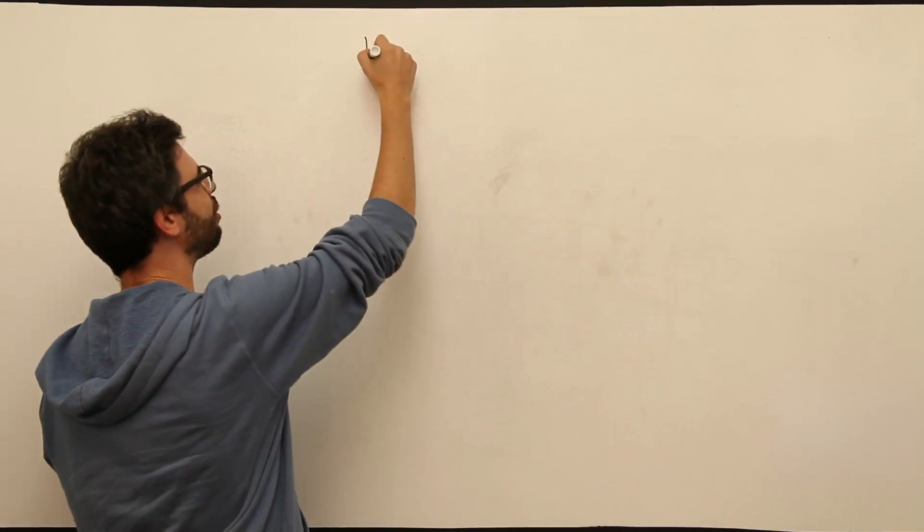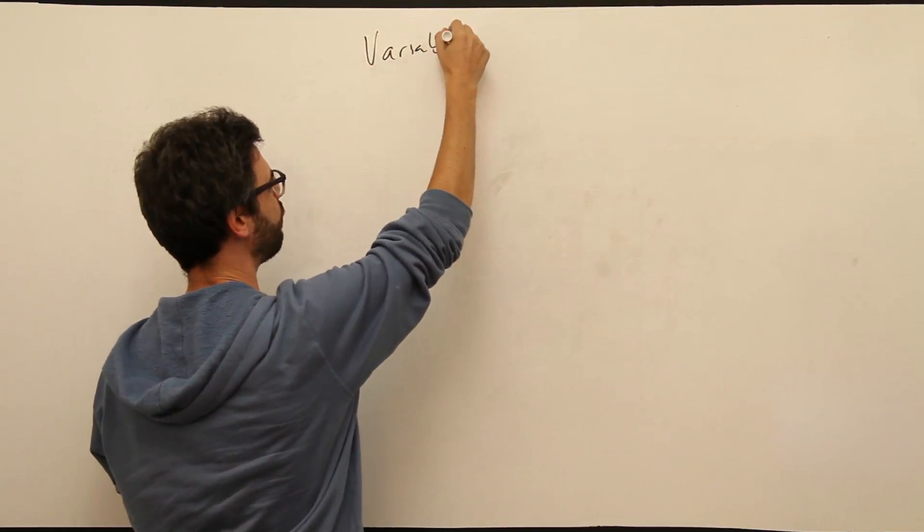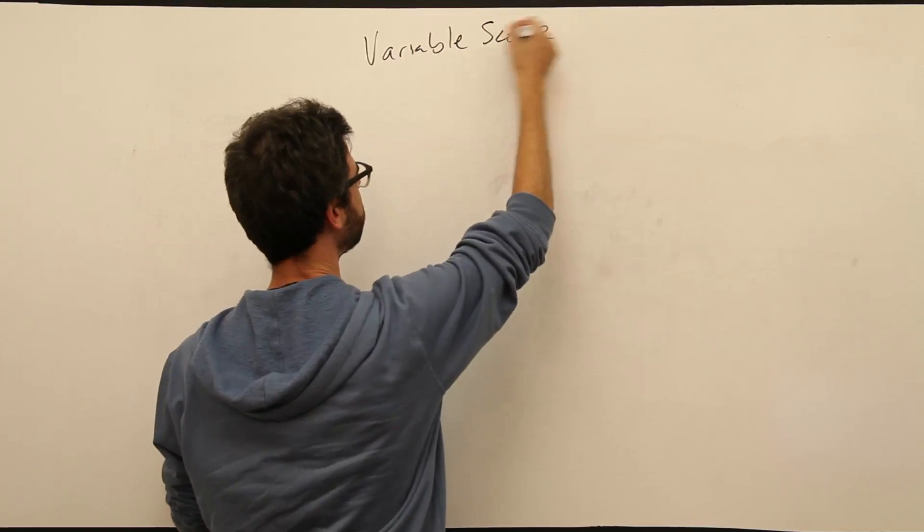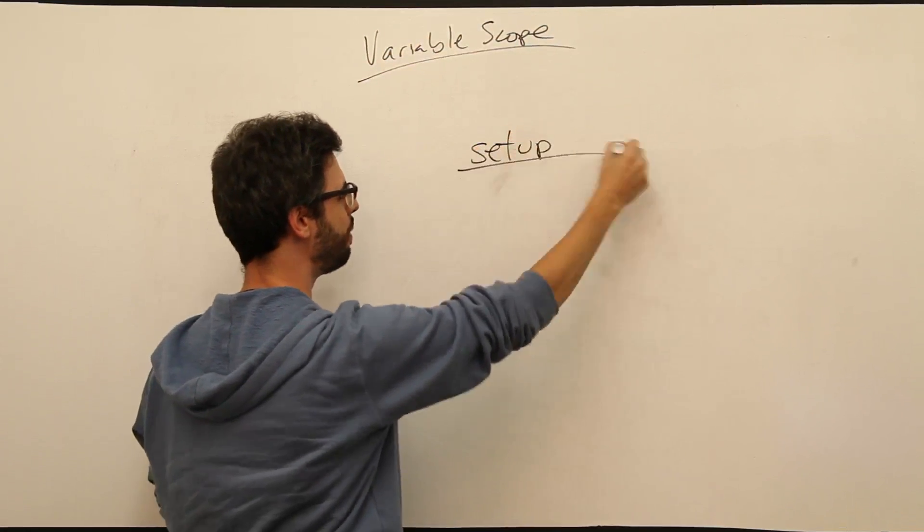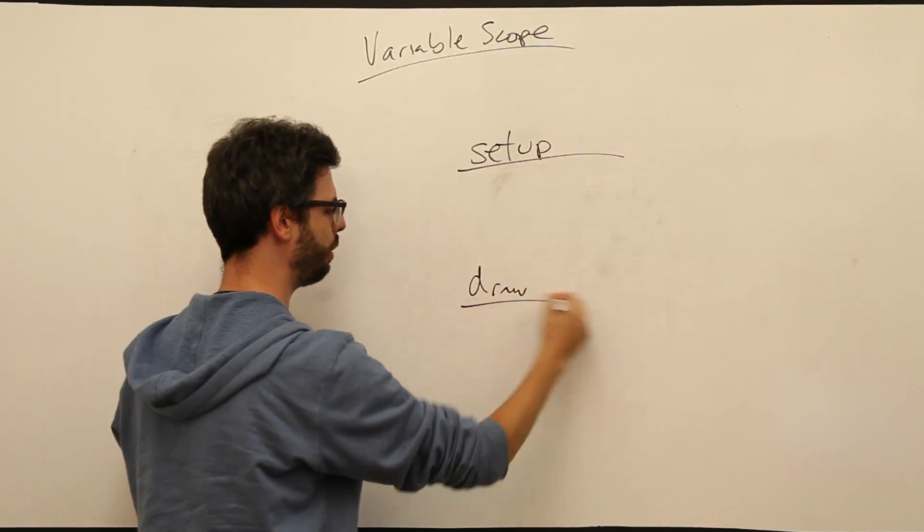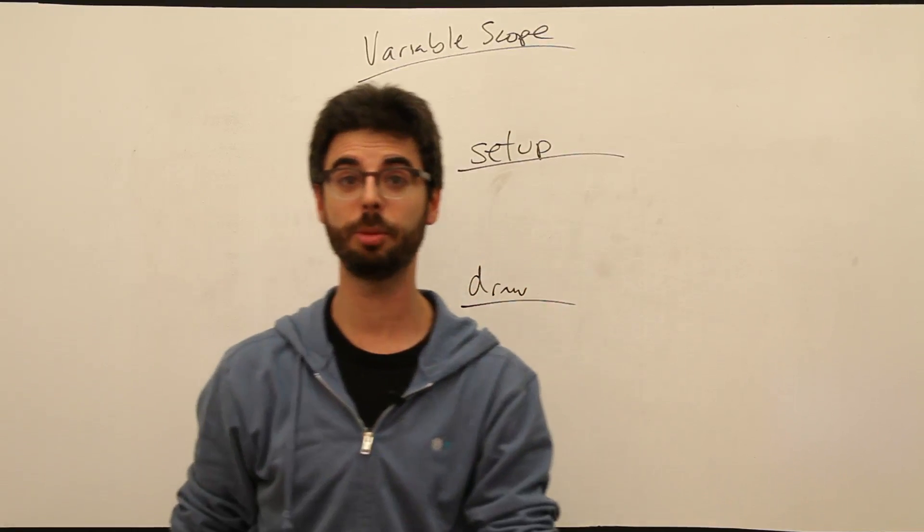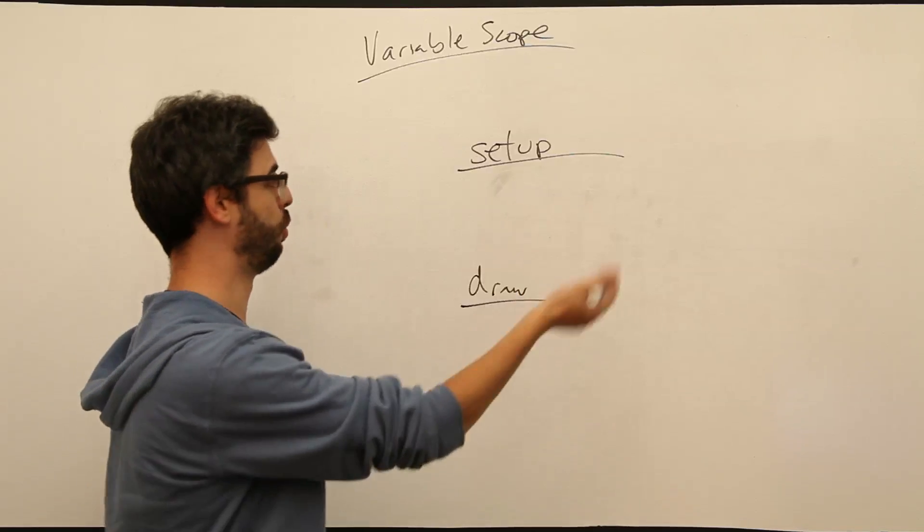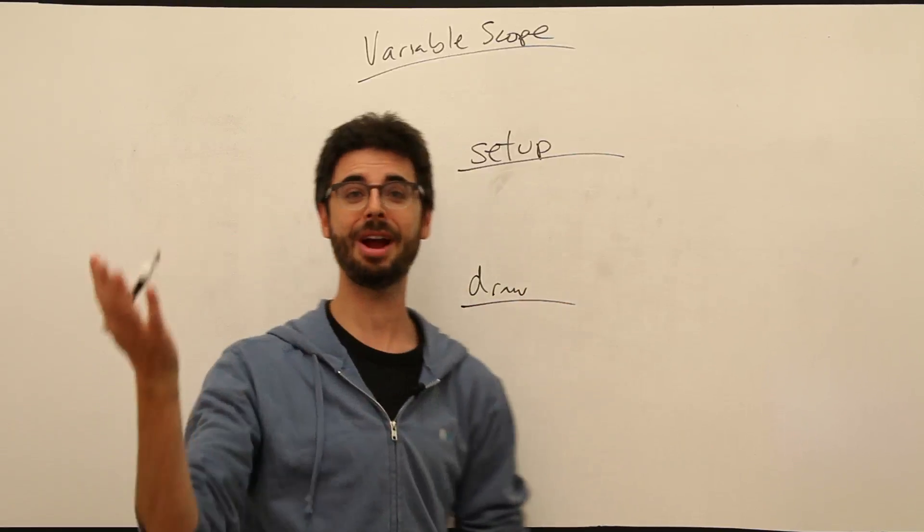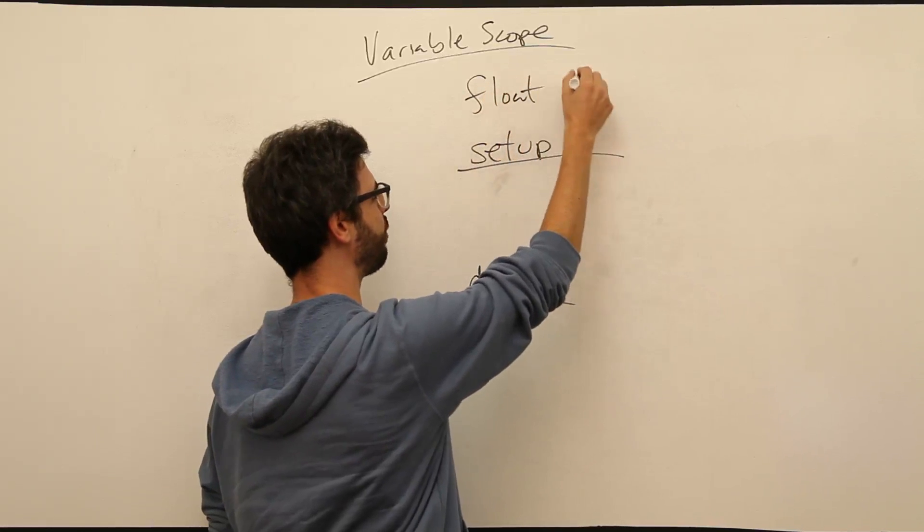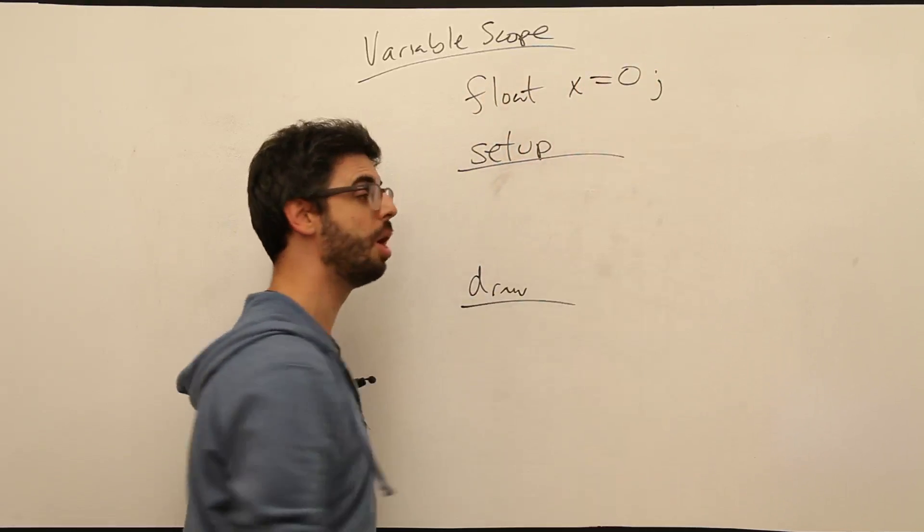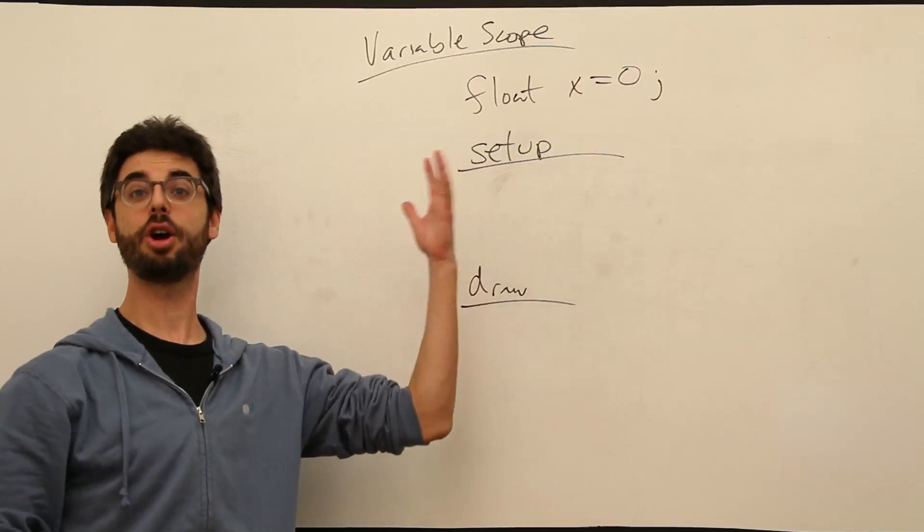So let's think about variable scope. Just to recenter ourselves, let's write the words variable scope. Now, we're used to writing processing sketches that have setup and that have draw. And we said, OK, well, you're going to use variables in your programs. What if we needed a variable x, for example? We need an x of type float, and it's going to be initialized to 0.